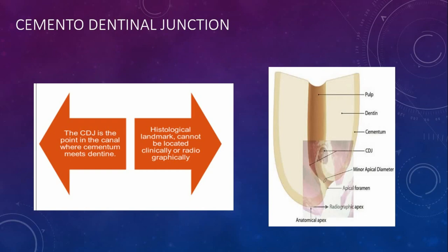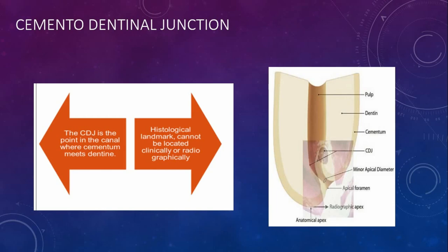An important landmark in root anatomy is the cemento-dentinal junction, which basically means the dentine meeting the cementum of the root apex. It is a histological landmark and cannot be located clinically or radiographically because it is present within the canal system; we cannot really determine it morphologically or clinically.